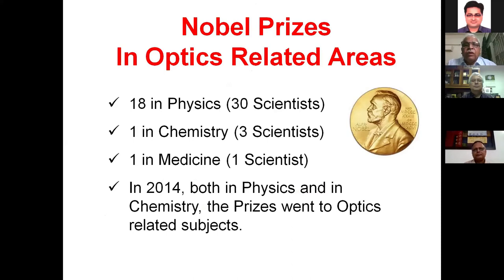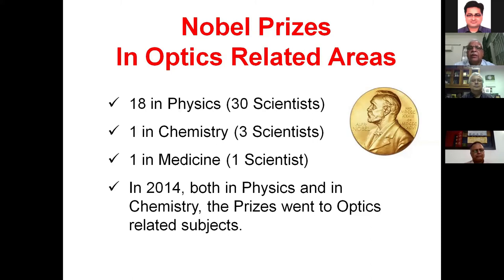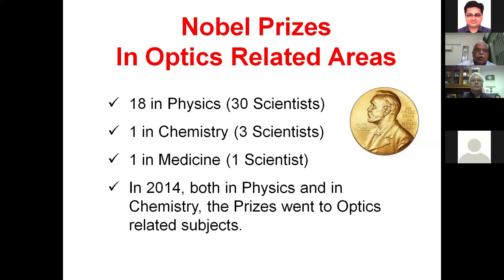Looking at how optics contributions have been recognized by Nobel Prizes: there have been 18 Nobel Prizes in Physics in the last 120 years, awarded to 30 scientists. Dividing by the laser's invention in 1960: up to 1960 only four Nobel Prizes in Physics went to optics-related work, but 14 were awarded after. That's the impact of lasers. One Nobel Prize was in Chemistry in 2014 and one in Medicine. In fact, 2014 has the distinction that both Physics and Chemistry Nobel Prizes went to optics-related subjects.